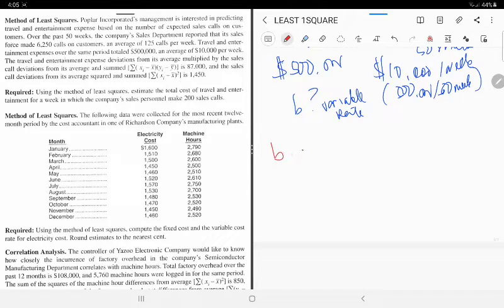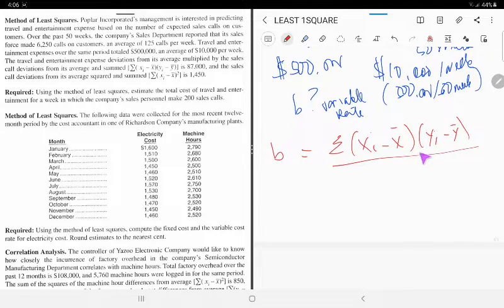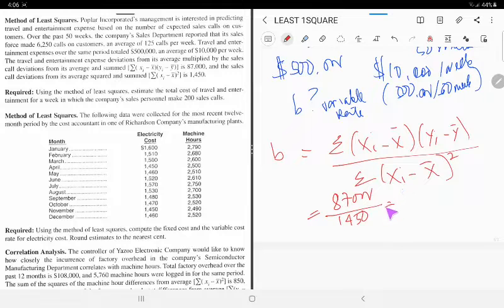B equals the summation of x sub i minus x bar multiplied by y sub i minus y bar, divided by summation of x sub i minus x bar squared. With the data, we have 87,000 divided by 1,450. You compute, how much? That would be 60. So that is our variable rate.